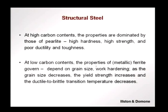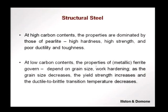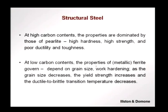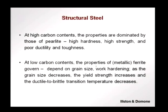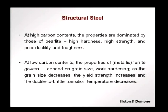In a steel at high carbon contents, the properties of the steel are dominated by those of pearlite. That means we have high hardness, high strength, but poor ductility and toughness. The material cannot elongate very much — it is hard and strong, but when you need to elongate a lot, it will break. At low carbon contents, we have domination by the metallic ferrite, the alpha phase. Here, strength and other properties depend on the grain size and work hardening. As the grain size decreases, the yield strength increases because grain boundaries are barriers to dislocation movement — smaller grains mean more barriers, requiring more stress to drive the dislocation.